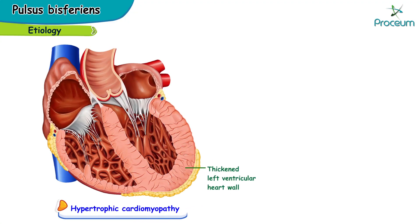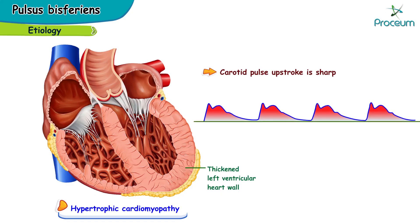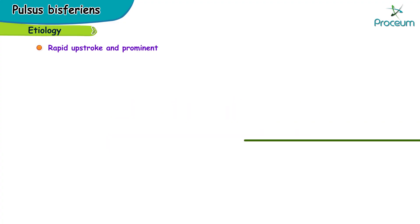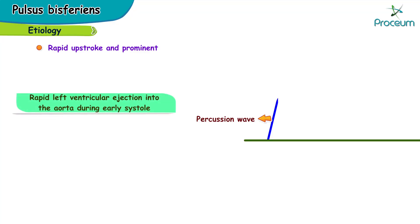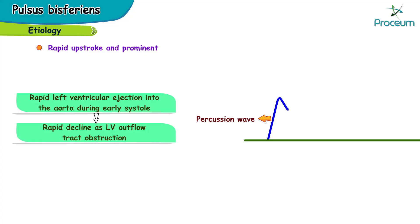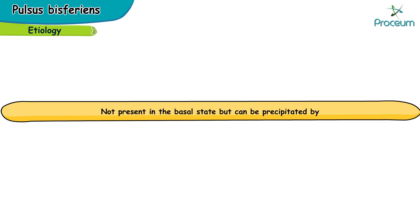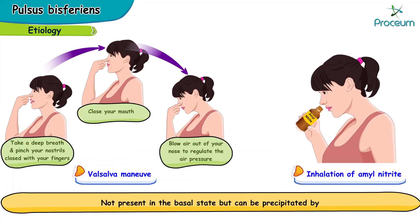In most patients with hypertrophic cardiomyopathy, the carotid pulse upstroke is sharp and the amplitude is normal. Pulsus bisferiens is rarely palpable but often recorded. The rapid upstroke and prominent percussion wave results from rapid left ventricular ejection into the aorta during early systole. This is followed by a rapid decline as left ventricular outflow tract obstruction ensues, a result of mid-systolic obstruction and partial closure of the aortic valve. The second peak is related to the tidal wave. Occasionally, a bisferiens pulse is not present in the basal state but can be precipitated by Valsalva maneuver or by inhalation of amyl nitrate.